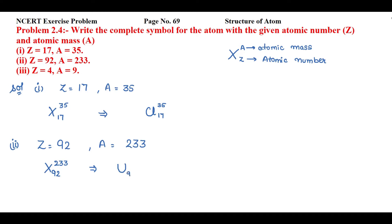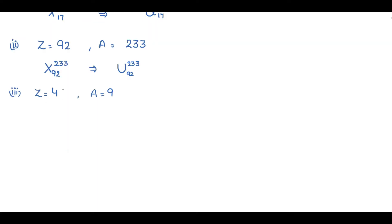The third one is Z equal to 4 and A equal to 9. Atomic number 4 is of beryllium, so I'll mention atomic number 4 as subscript and atomic mass 9 as superscript. So the complete formula of this element is Be with 4 and 9.